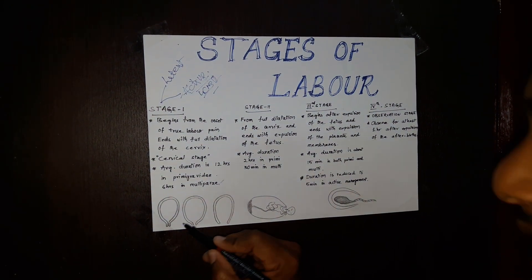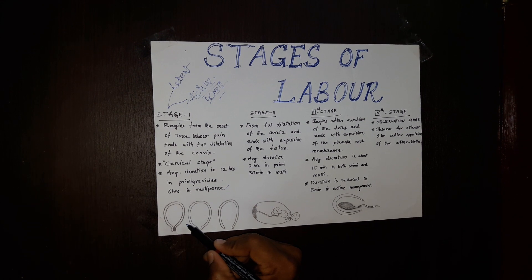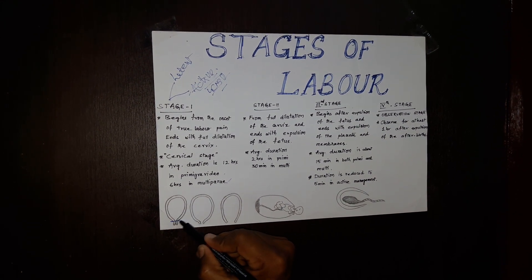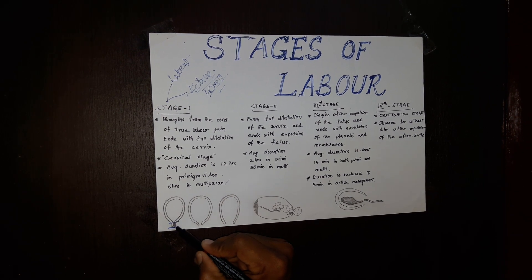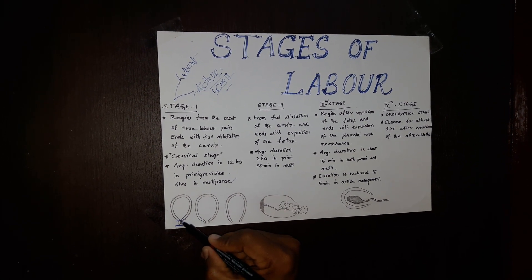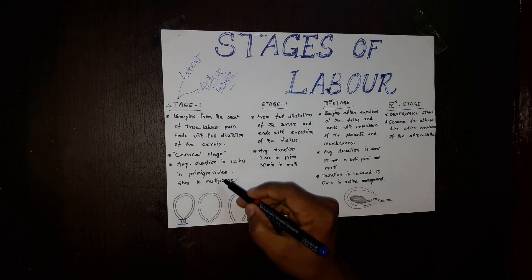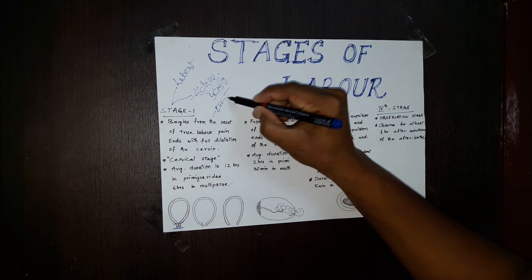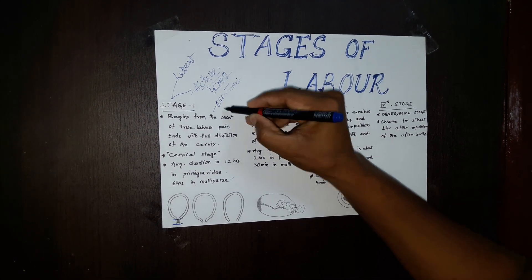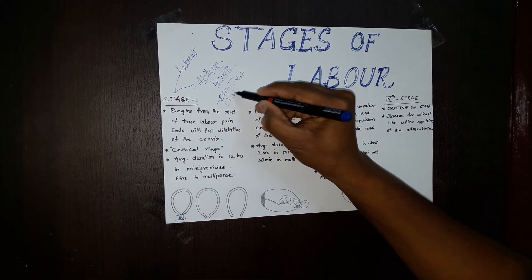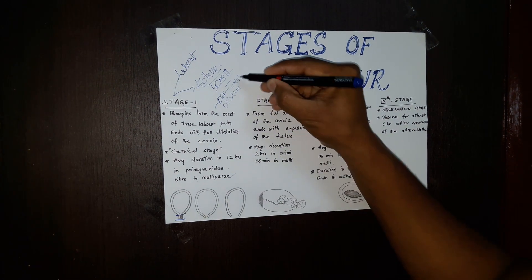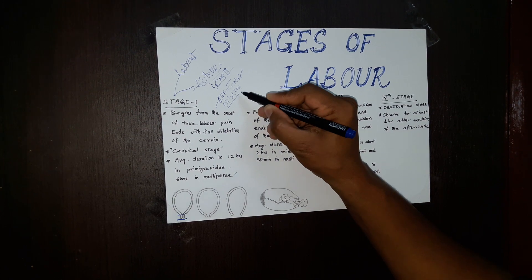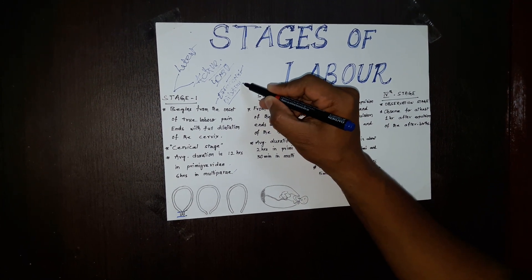Looking at how the changes take place in this stage: this is the uterus, and this part is the cervix. This is a normal cervix without dilatation and effacement. Two things are happening here — one is effacement and another is dilatation. Effacement is the thinning of the cervix, and dilatation is the widening of the cervix.